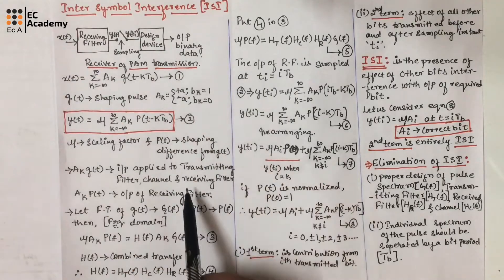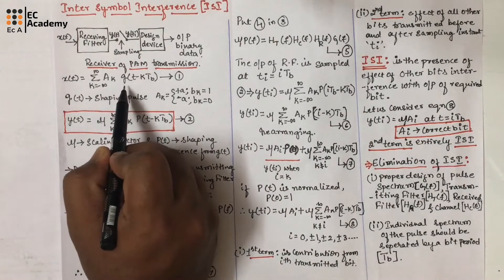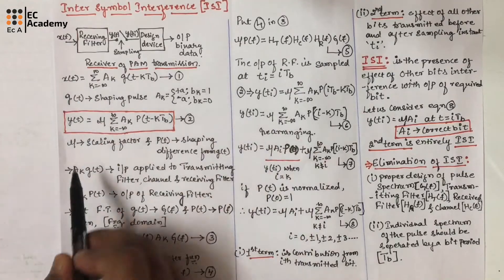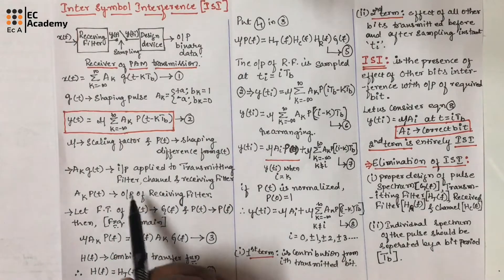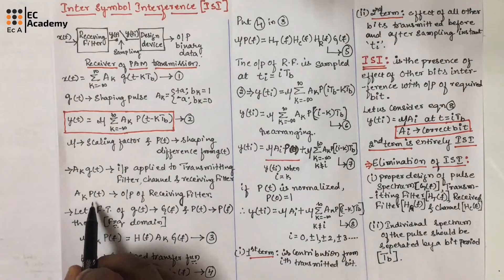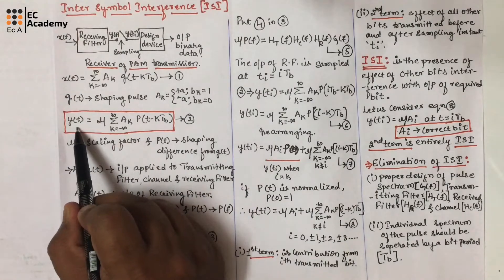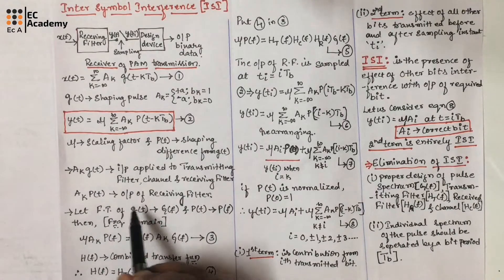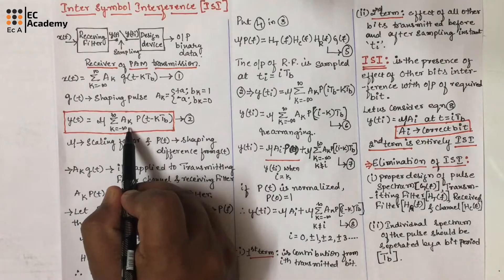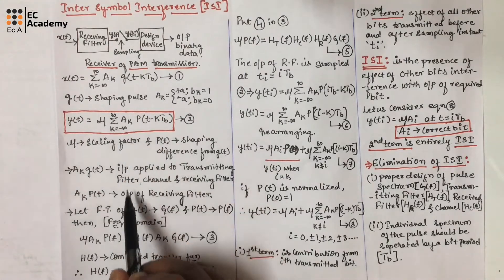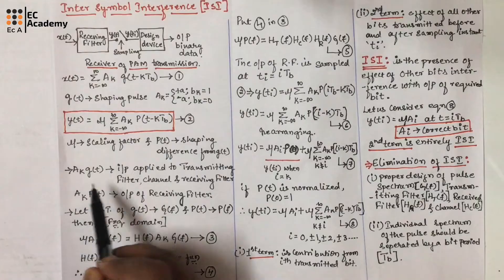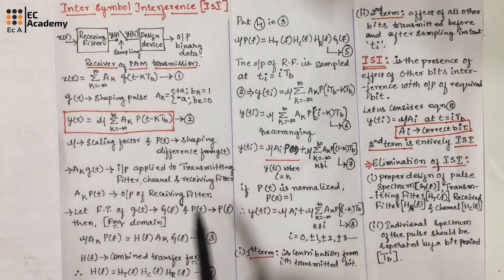Since X(t) is applied to the transmitting filter, channel, and receiving filter, we have the term a_k · g(t) with respect to X(t). We can say a_k · g(t) is the input applied to the transmitting filter, channel, and receiving filter. The term a_k · p(t) is with respect to Y(t), which is the output of the receiving filter. Taking individual terms for a single bit: a_k · p(t) is the output of the receiving filter, and a_k · g(t) is the input to the receiving filter, received from the transmitting filter and channel.